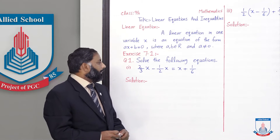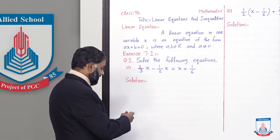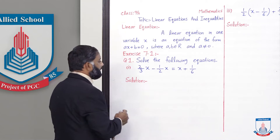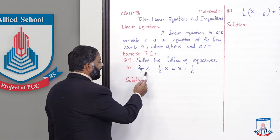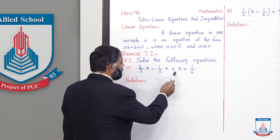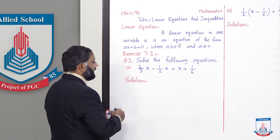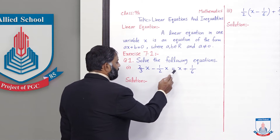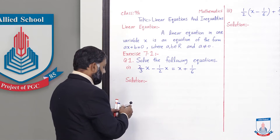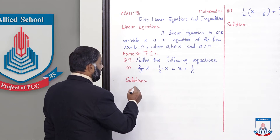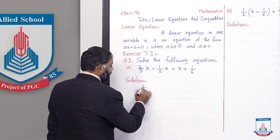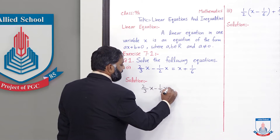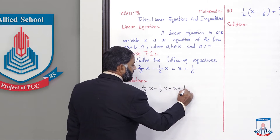Ab hum solution start karenge linear equations ka. Exercise 7.1, question number 1 hai: Solve the following equations. First part hai: 2/3 x minus 1/2 x is equal to x plus 1/6. Is equation mein ek variable x involved hai, aur jahan pe bhi x aa raha hai uski maximum power 1 hai.